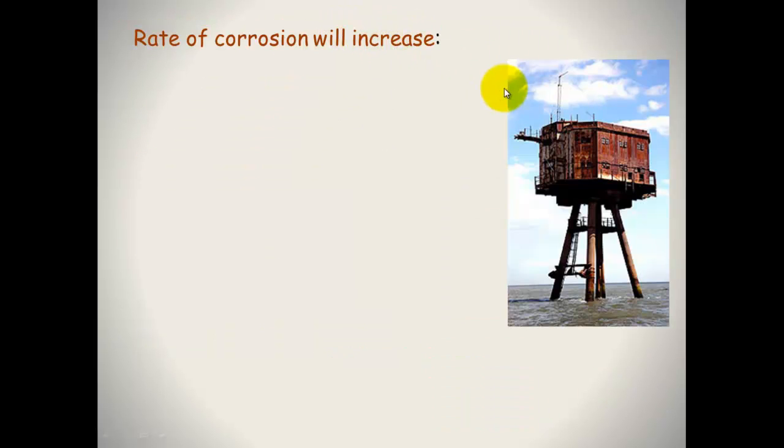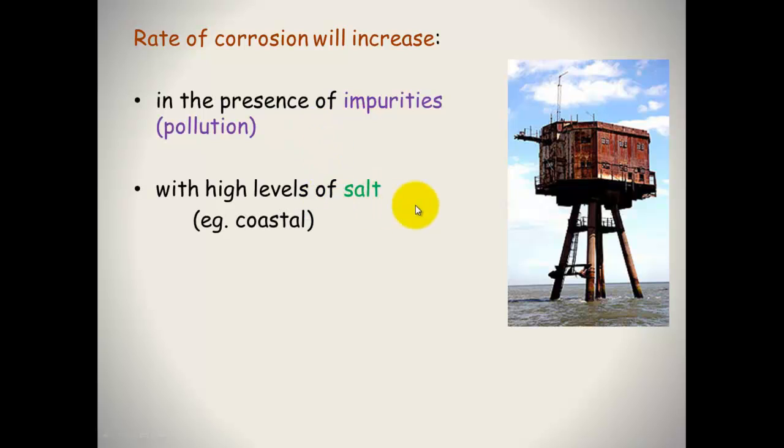Rate of corrosion will increase, and I like this picture because it pretty much sums it up, with the presence of impurities such as pollution, with high levels of salt in coastal areas. You'll find that cars that live by the coast have a much shorter lifetime and will corrode a lot more quickly and rust than cars that aren't near the ocean. And people will wash them more regularly to get rid of that salt. And in regions of stress.